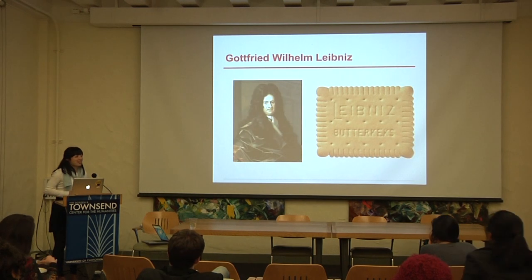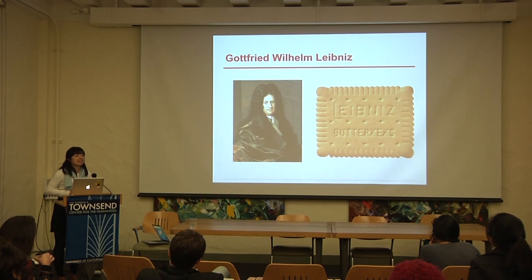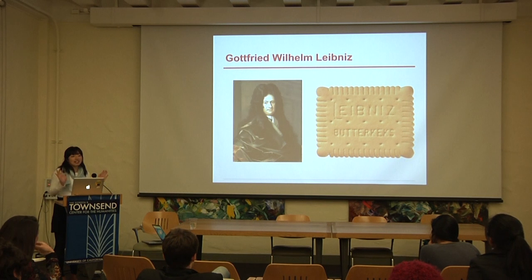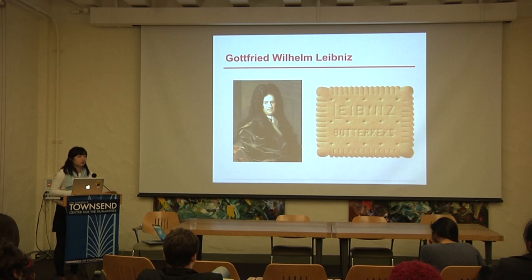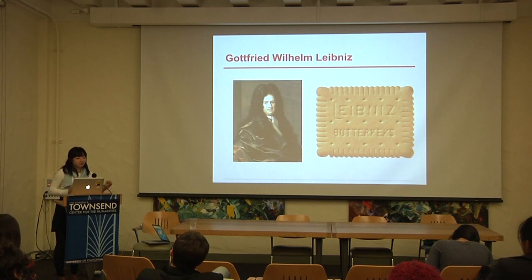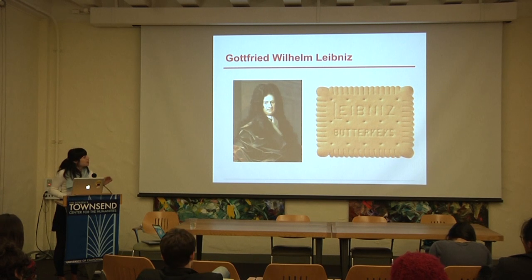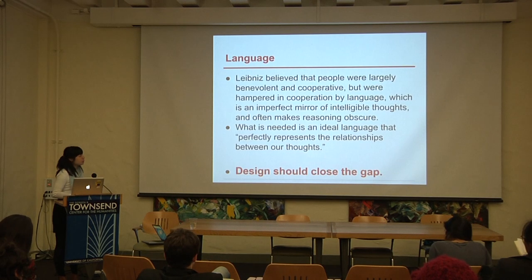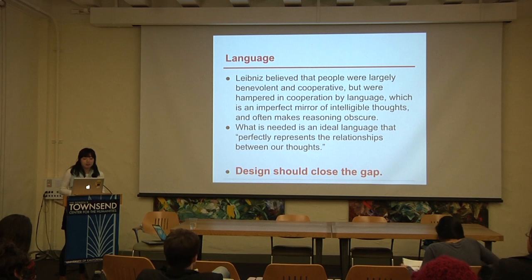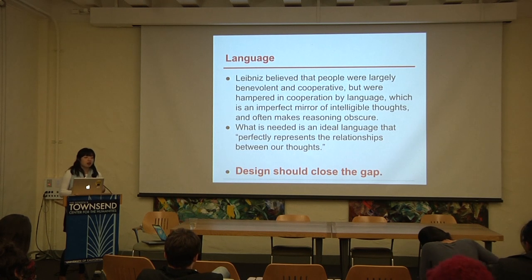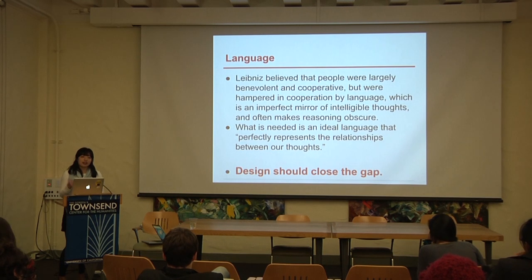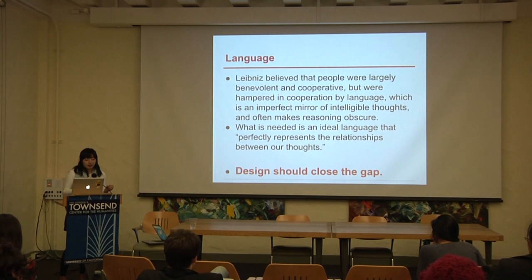My favorite philosopher from that class is Leibniz. Professor Aguirre actually had a slide of the Leibniz cookie alongside a picture of him. He was a very influential philosopher who also wrote very long and convoluted sentences. He's been influential in my career in how I think about language: he believed people were largely benevolent and cooperative, but language hampered their cooperation because it is an imperfect mirror of our thoughts. He envisioned an ideal language called the 'universal characteristic' — a symbol-like drawing system representing people's thoughts. What I got out of that was that design should close this gap and allow people to effectively express what they want to do.